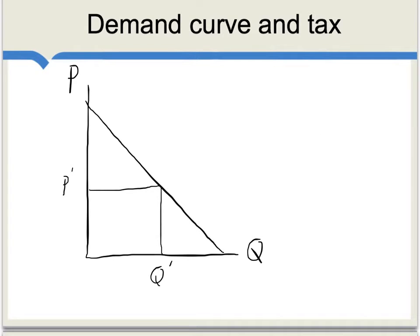Here we can see the demand curve for Saudi oil, first in the absence of a tax. To maximize profits with zero marginal cost, the Saudis will choose this point on the demand curve, and we get this market quantity in equilibrium and this market price. Profit for the Saudis will be given by the size of this rectangular box here.